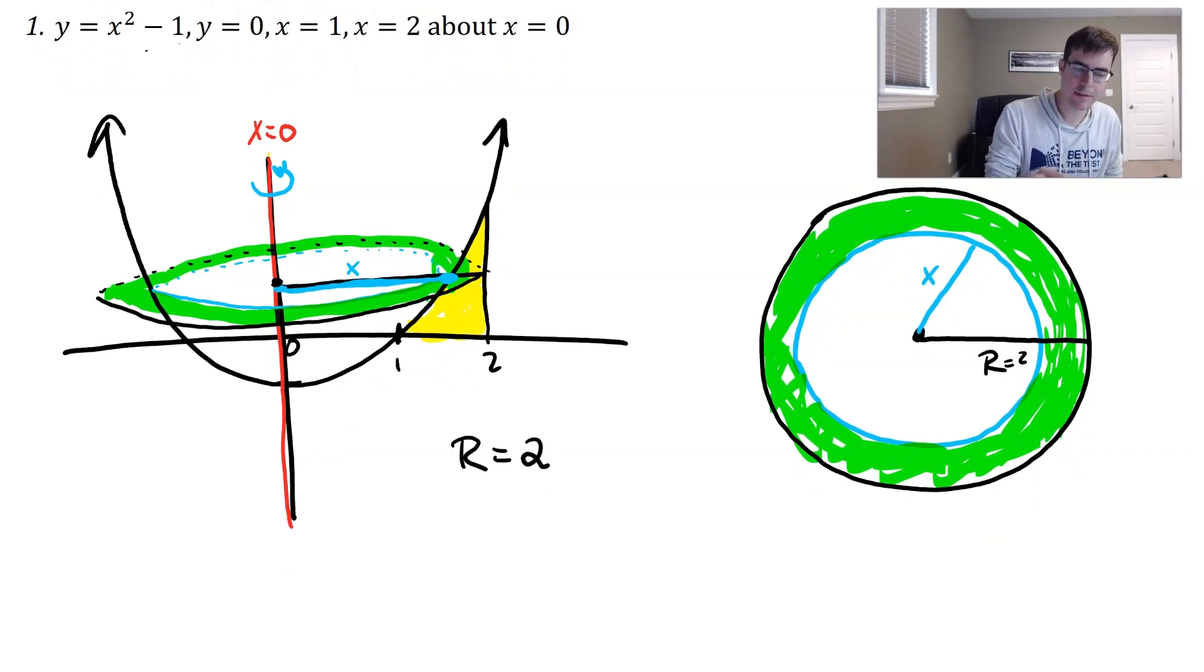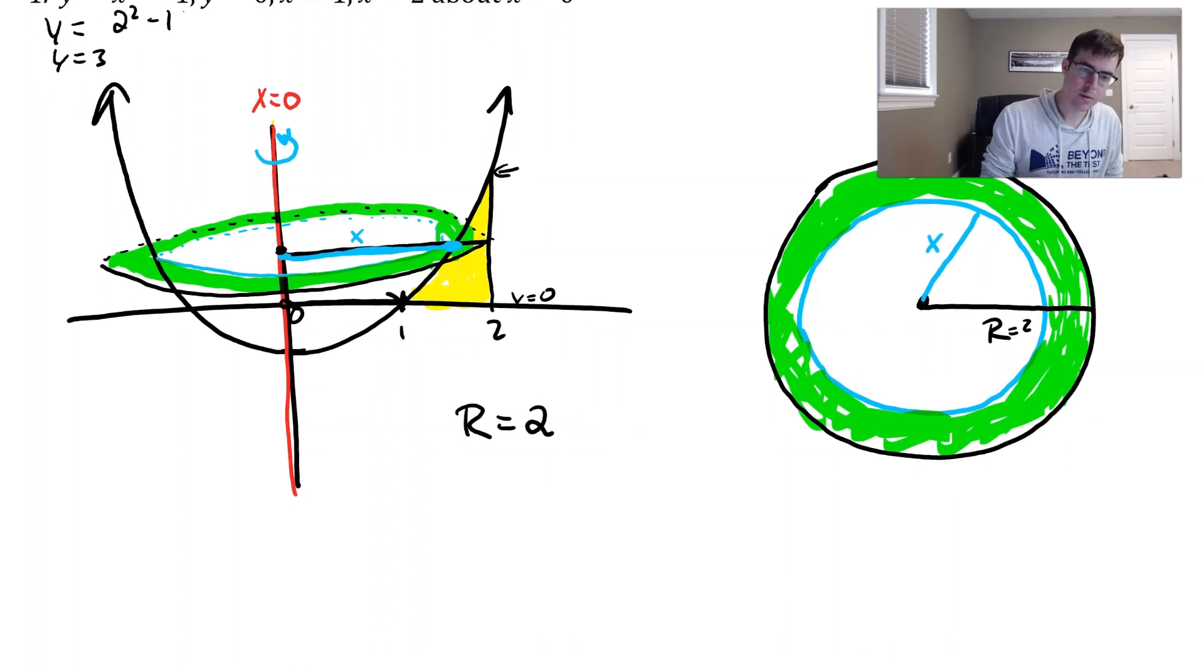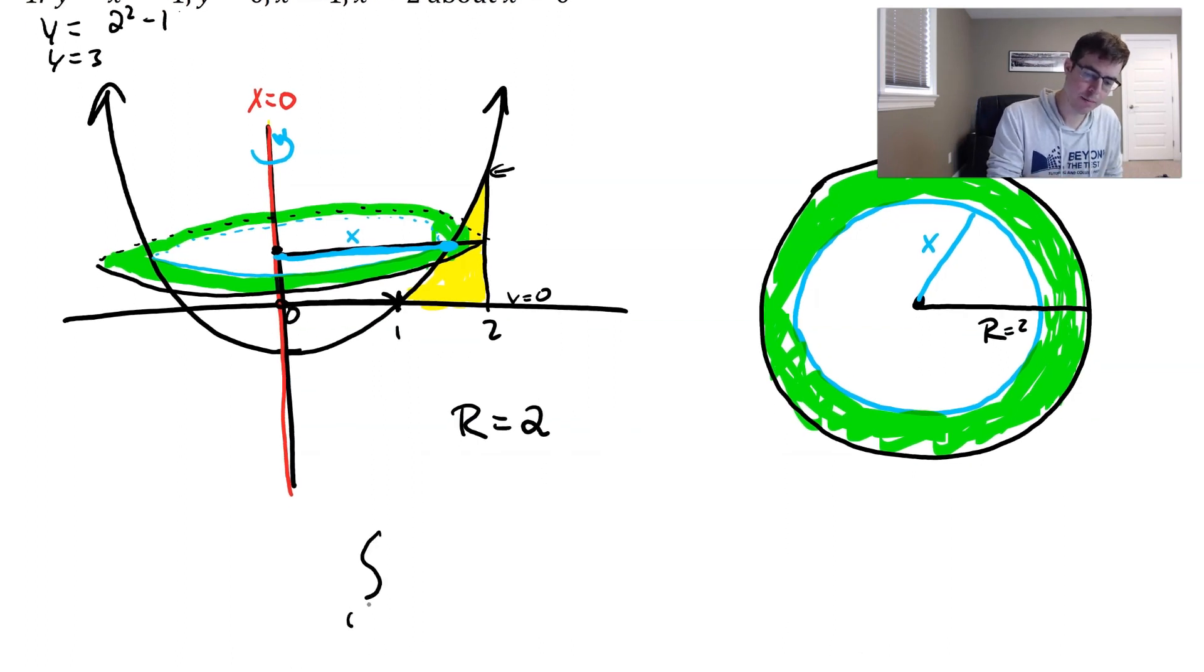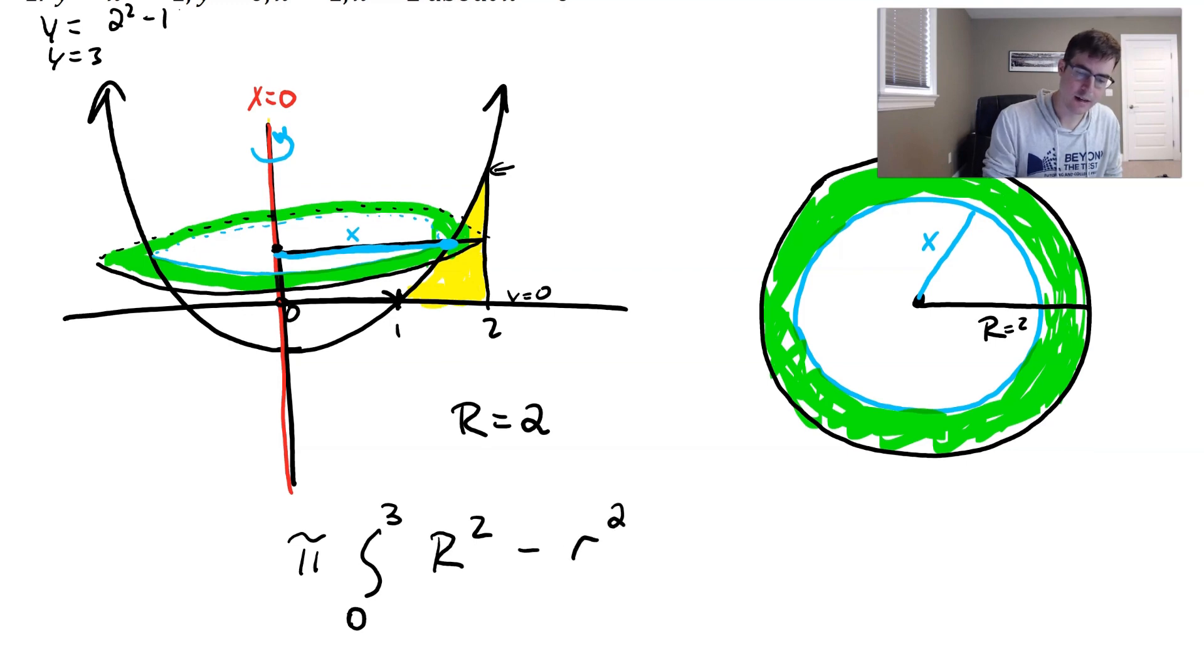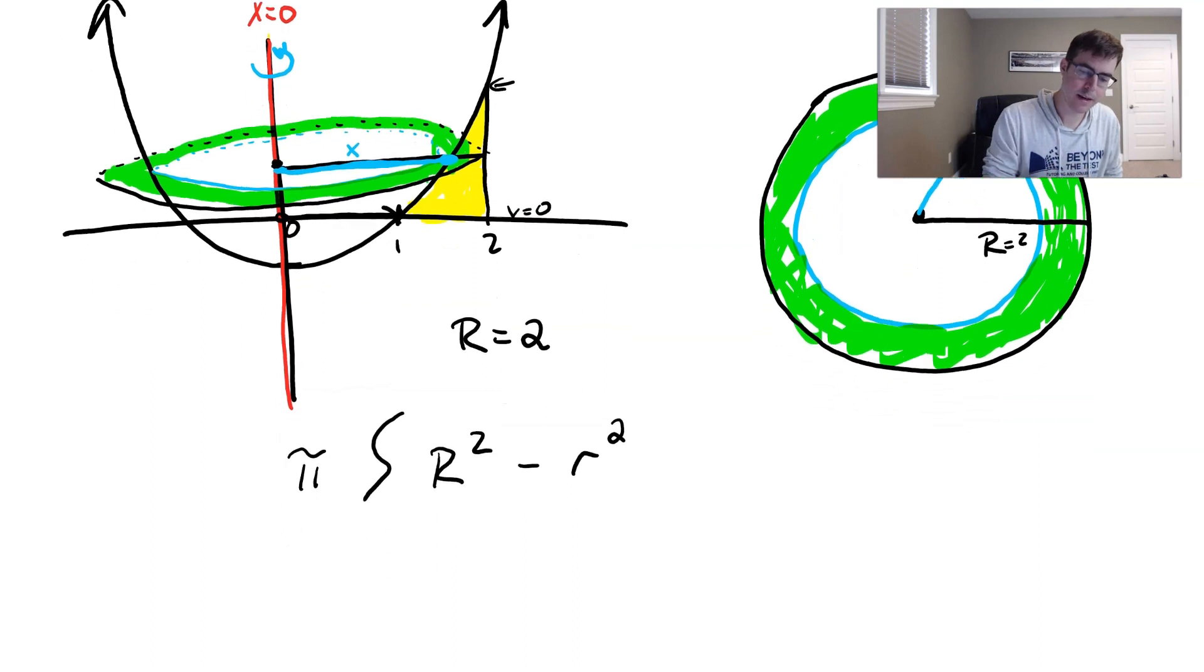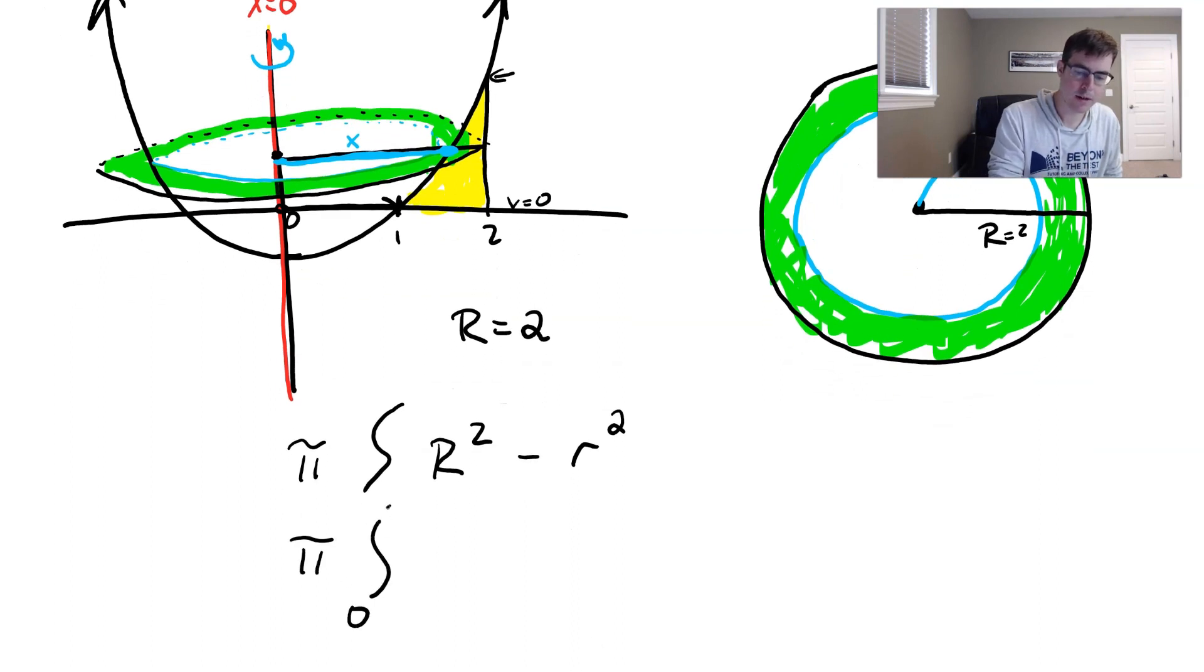Now first things first, since everything's in terms of Y, we need our lowest Y value, which in this region, it goes down to Y is zero, and then the highest Y value. Well, and when X is two, two squared minus one, we get that Y is equal to three. So when I'm writing this out, our boundaries are going to be from zero to three. And remember, we're doing pi R squared minus pi little r squared. So when we do this out, you know, I'll write it there. We're going pi from zero to three.